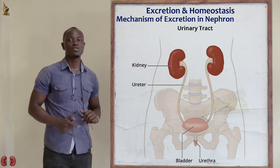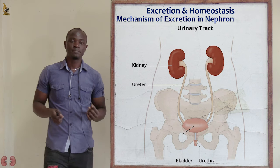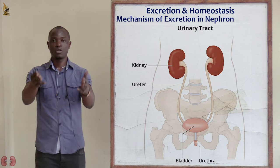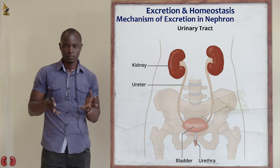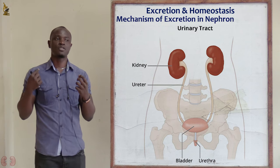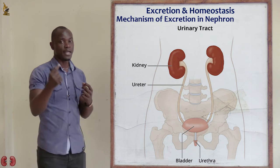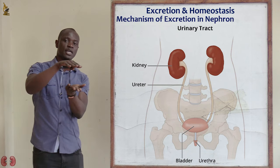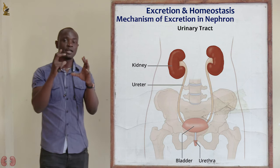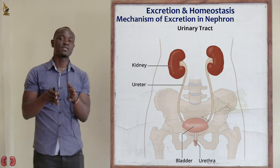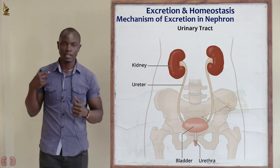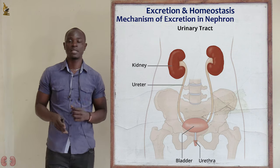From the urinary bladder, the urine moves from the bladder through the urethra and is released to the outside environment through the process of excretion. The nephrons make the urine and pass it through the medulla, collecting duct, and then to the pelvis. From the pelvis, through the ureter, the urine is taken into the urinary bladder, and from the bladder, it moves out of the body through the urethra in a process called excretion.